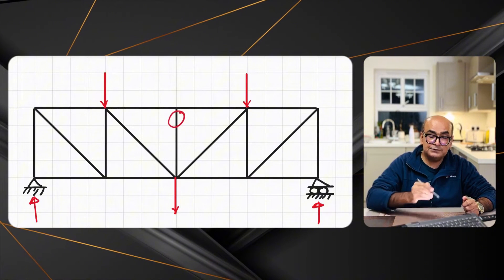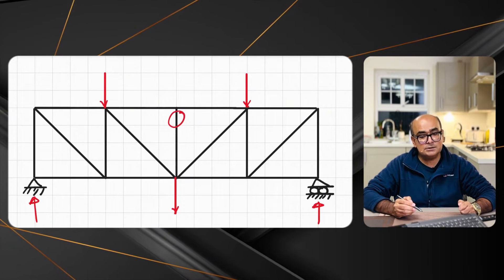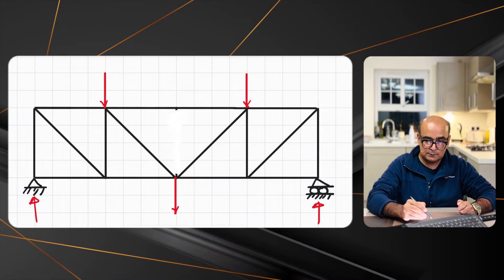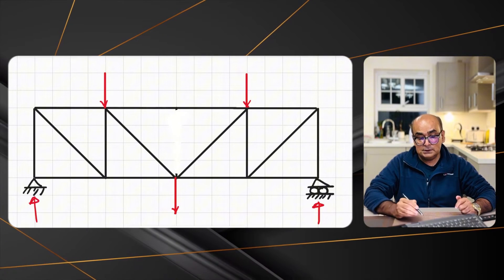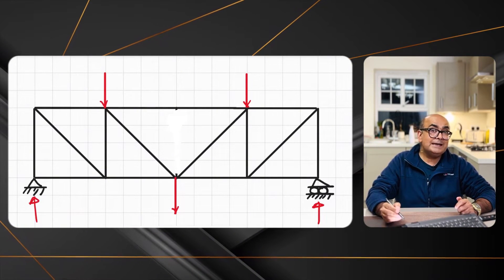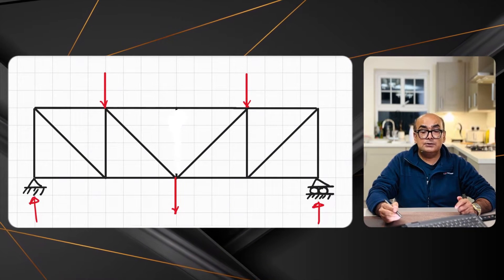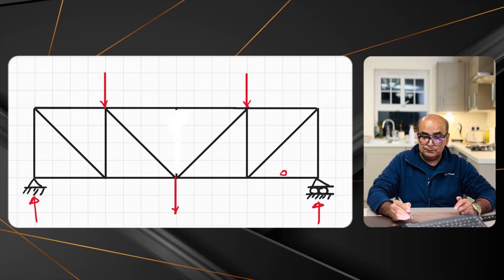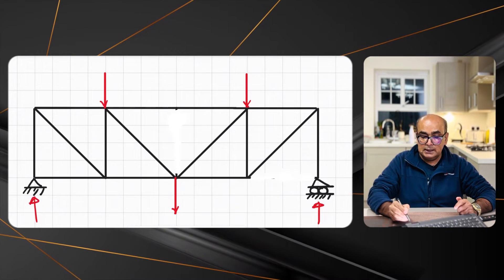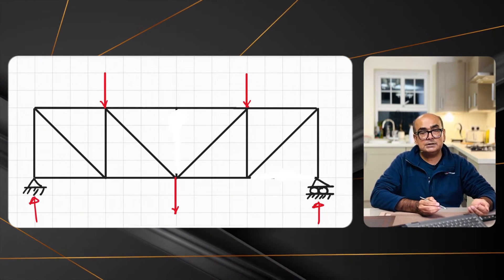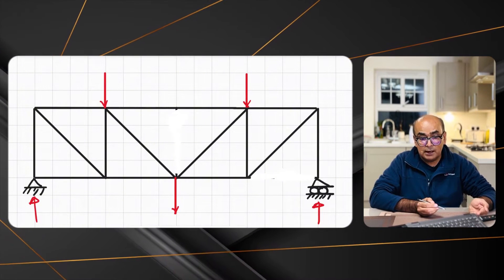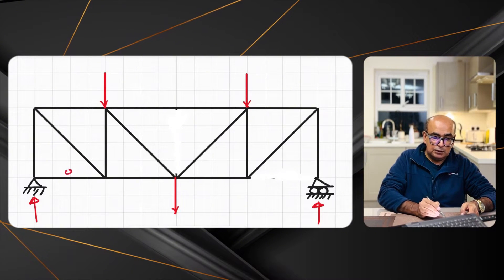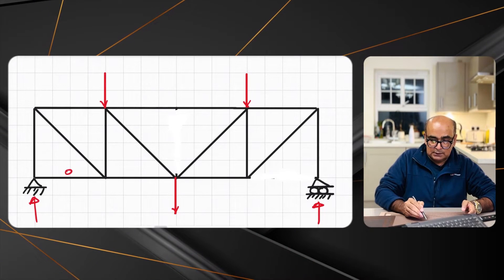That member connected here is a zero force member — let's remove it. On the right side, there is no horizontal reaction because of the roller support, so the force in that horizontal member is also zero. Due to symmetry, on the left side there won't be any horizontal reaction at the pin support either, because there is no horizontal load applied, so the force in that member is zero as well.